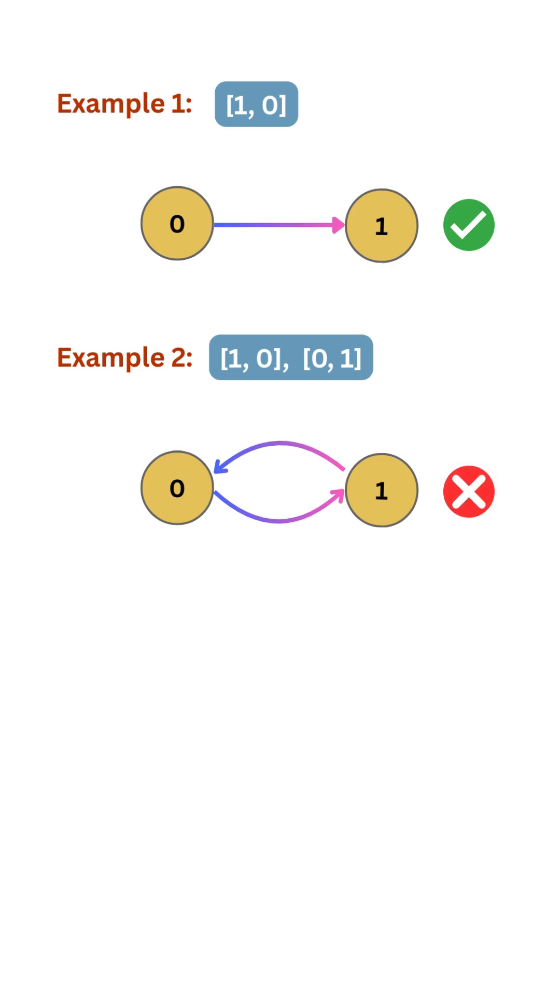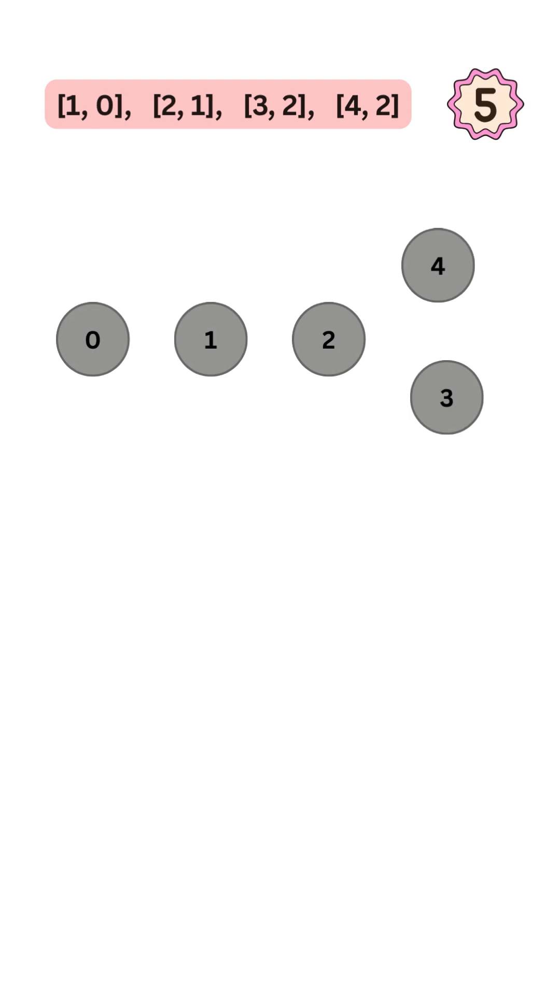So how do we detect if there's a cycle in the courses graph? To understand how cycle detection works, let's use this list of course prerequisites. We are given five courses in total. Course 0 is the prerequisite of course 1. Course 1 is the prerequisite of course 2. And course 2 is the prerequisite of courses 3 and 4.